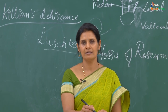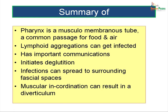In summary, the pharynx is a musculomembranous tube serving as a common passage for food and air. Waldeyer's ring of lymphoid aggregations guards both pathways against infection. The pharynx has important communications with the nasal cavity, oral cavity, larynx, and tympanic cavity. It initiates deglutition, and infections can spread via the retropharyngeal and parapharyngeal spaces. Muscular incoordination in the inferior constrictor can result in a mucosal diverticulum.